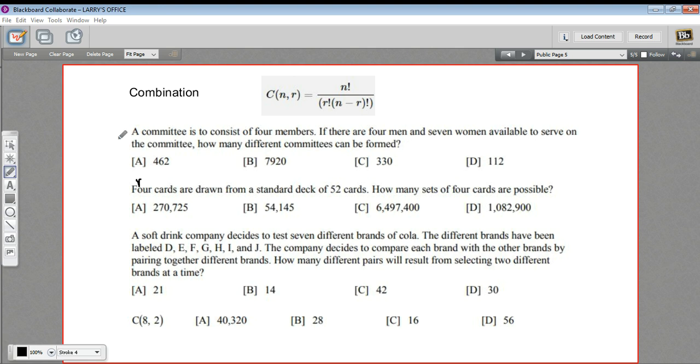So look at this first problem. It says a committee is to consist of four members and there are four men and seven women available to serve. So that's a total of 11 people. We're choosing four members from 11, and it doesn't matter what order we choose them in. So this is a combination.